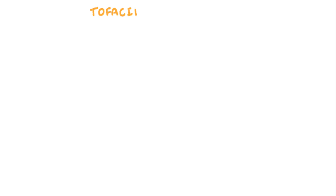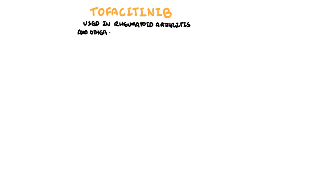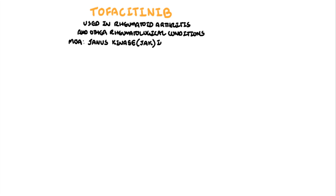Tofacitinib is an oral agent taken twice daily, used to treat many rheumatological conditions, mainly rheumatoid arthritis. Tofacitinib inhibits Janus kinase signaling. Janus kinase is abbreviated JAK.